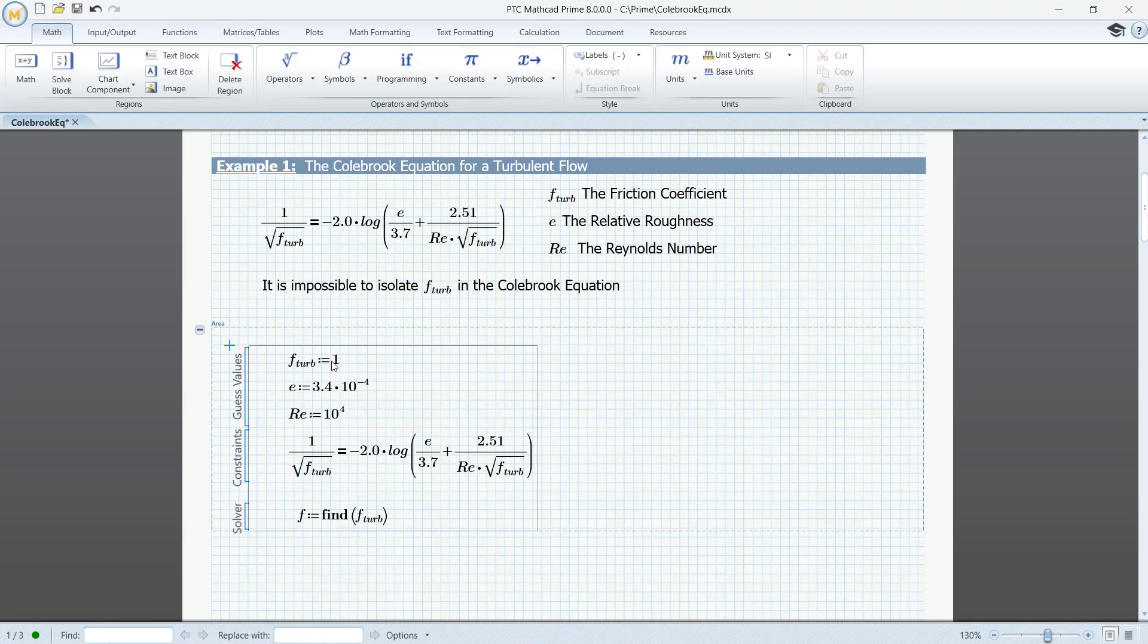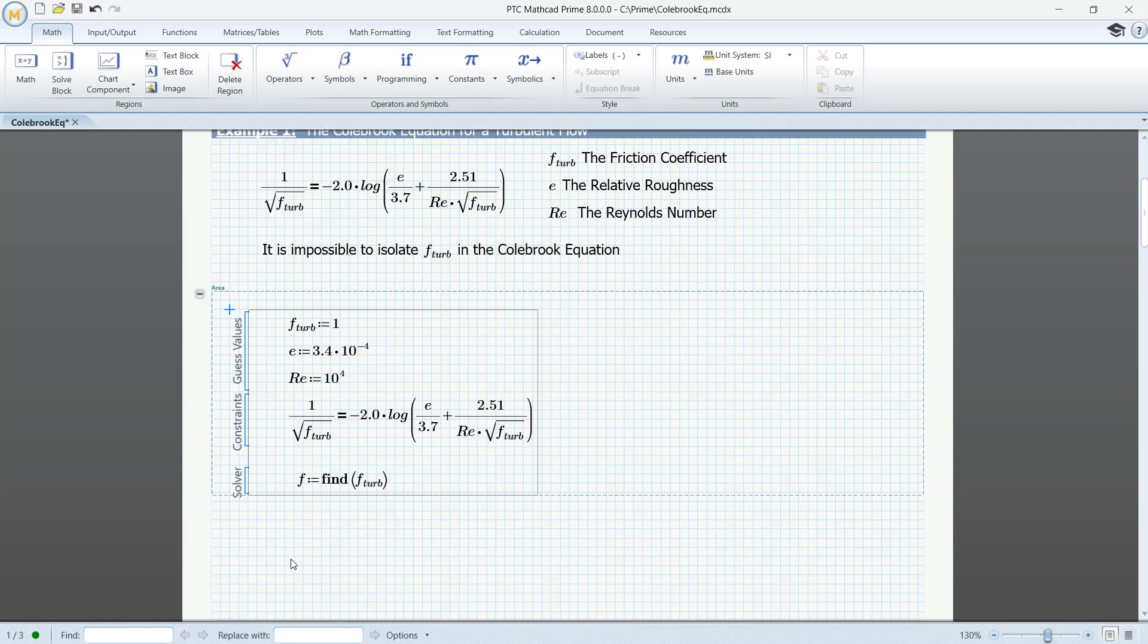The values for E and RE are the actual values. The solve block will find the value of f Turb to satisfy the Colebrook equation. And let's see what it is.